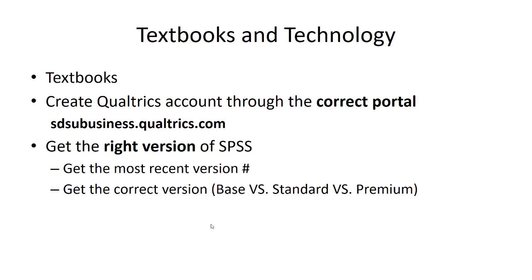In addition, you'll notice that we all are going to create Qualtrics accounts. Qualtrics is a very high-powered online survey platform, and luckily, because of our relationship with San Diego State University, we are able to gain access and create full-functioning accounts. However, that means you need to go to a specific portal, sdsubusiness.qualtrics.com, when you make your free account. Also, make sure you use your sdsu.edu email address. Some students who still have the old mail.sdsu.edu email addresses may have to create their account using that version of your email.